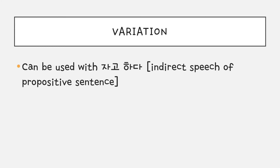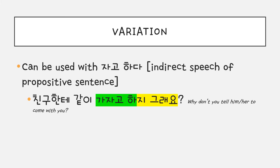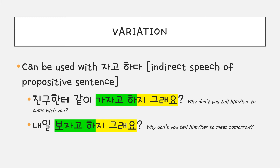You can also use 지 그래요 with 자고 하다. 자고 하다 is an indirect speech form of a propositive sentence. For example: 친구한테 같이 가자고 하지 그래요. 내일 보자고 하지 그래요.